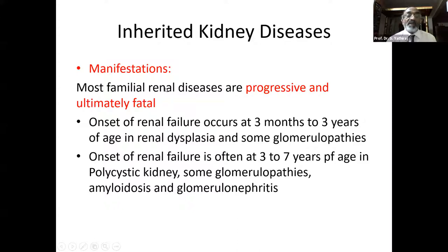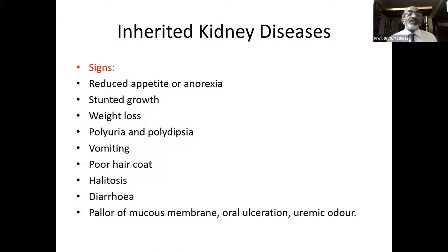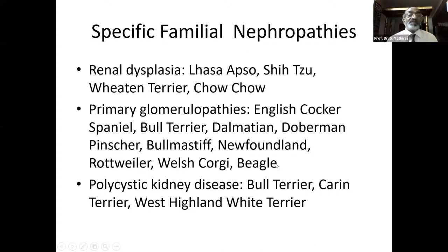Imagine these signs in dogs presented to the clinic: reduced appetite or anorexia, stunted growth, weight loss, polyuria, polydipsia — particularly in the age group of six months to one year. We might start suspecting diabetes insipidus, but this could be a sign of renal disease. Also vomiting, poor hair coat, halitosis, diarrhea, pale mucous membranes, oral ulceration, uremic odor — this is how they are presented.